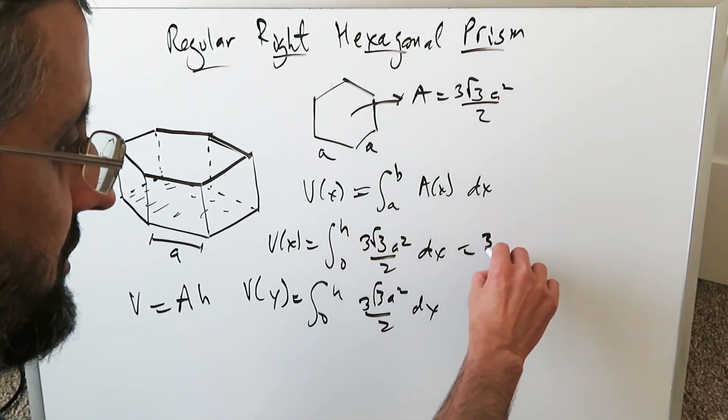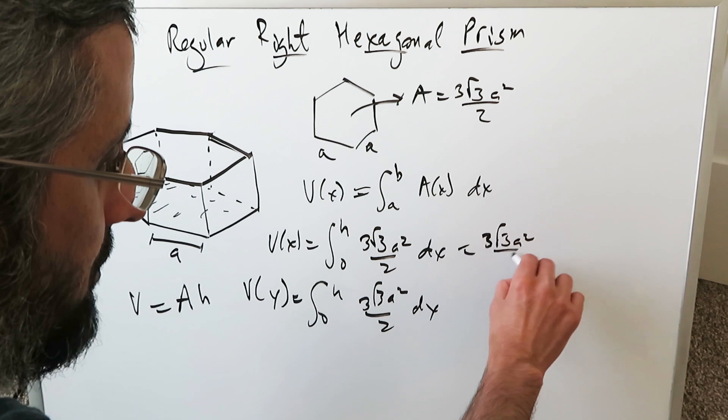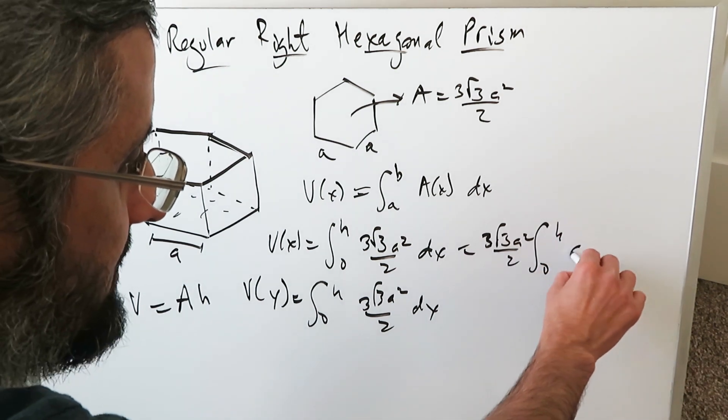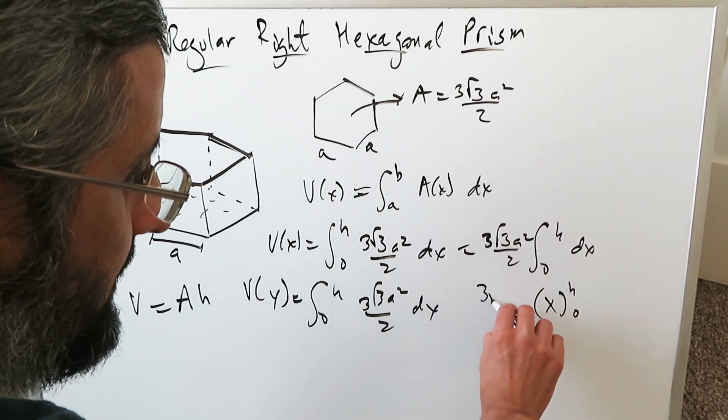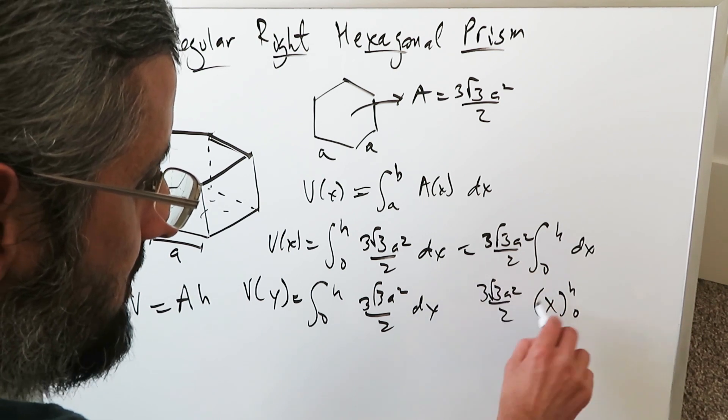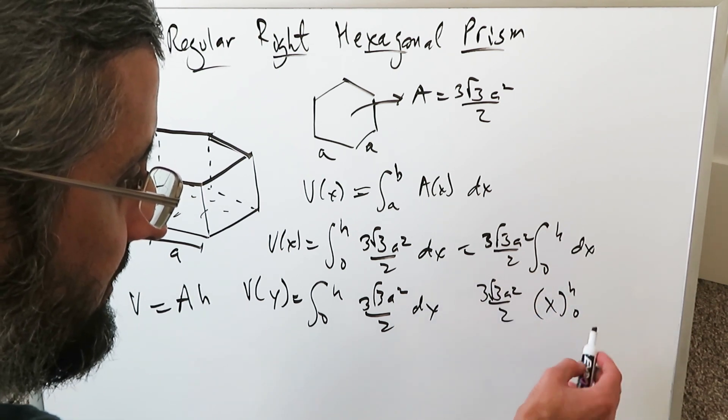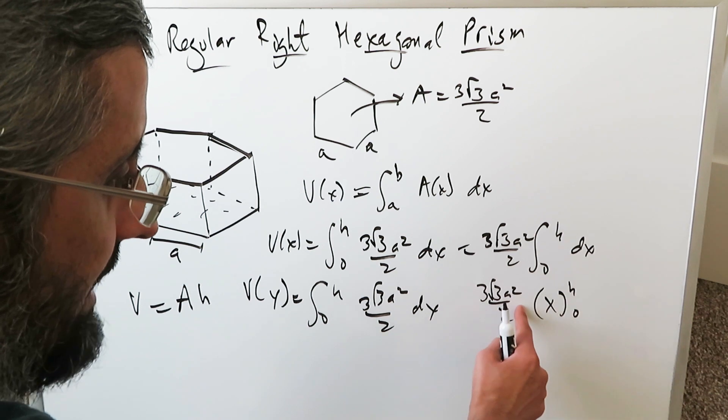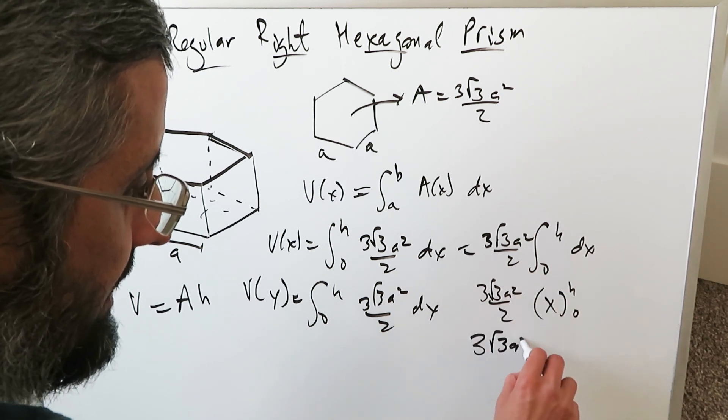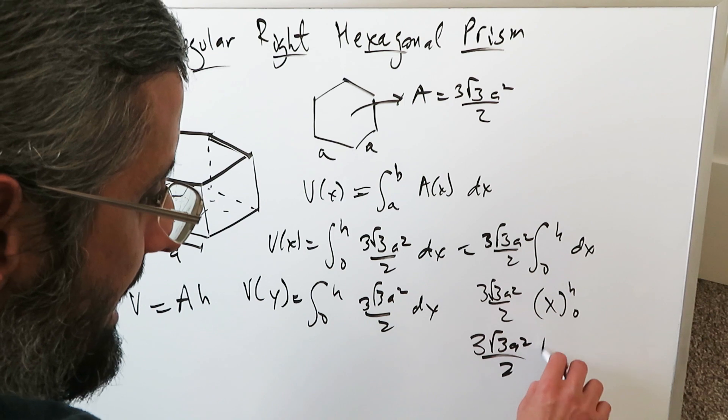This right here is a constant. You can push it out: 3 root 3 A square over 2, 0 to H dx. X with an H and a 0. You have 3 root 3 A square over 2, upper limit, lower limit, and the difference of the two. You're basically having the H multiply with this. Your end result is 3 root 3 A square over 2 H.